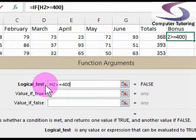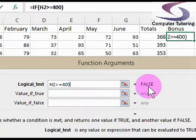So it's asking the question, is H2 greater than or equal to 400? In this case it's not. So we're going to say false.